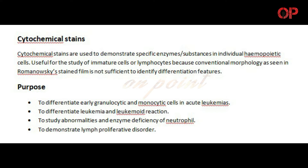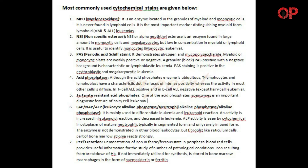Purpose: To differentiate early granulocytic and monocytic cells in acute leukemias. To differentiate leukemia and leukemoid reaction. To study abnormalities and enzyme deficiency of neutrophil. To demonstrate lymphoproliferative disorder. Most commonly used cytochemical stains are given below.